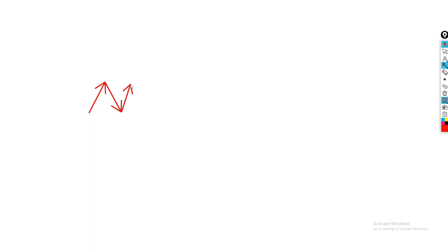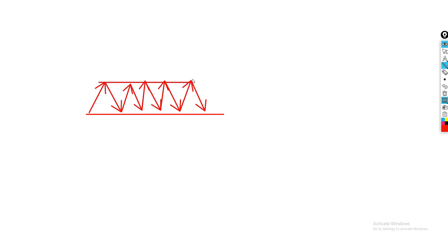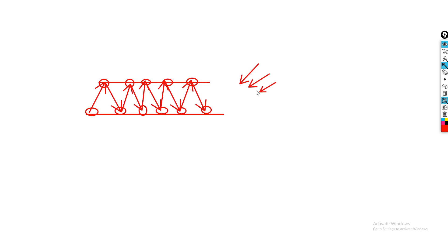To illustrate my point, let's draw a consolidating market. If you trade retail concepts, what you've been told is that you need to buy at support and sell at resistance. Retail traders see price bouncing multiple times and plan to sell the next touch of resistance, and buy at support. What the market is actually doing when it behaves like this is engineering liquidity — it's creating liquidity.